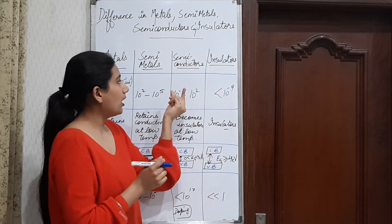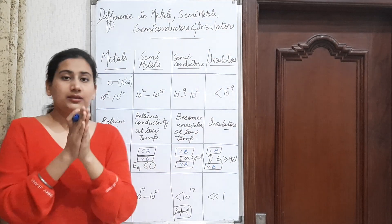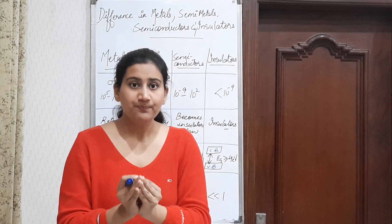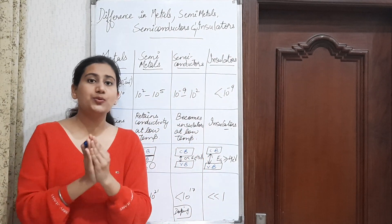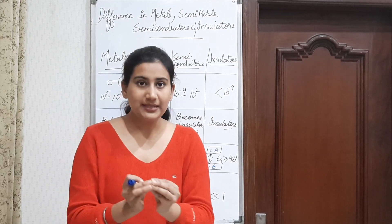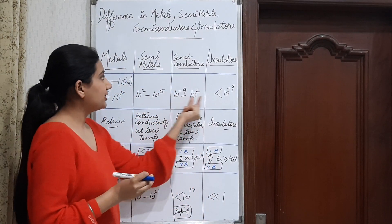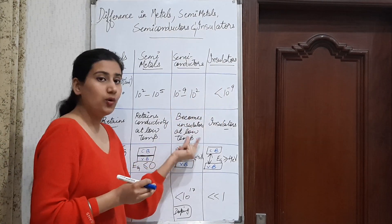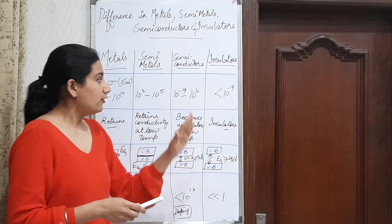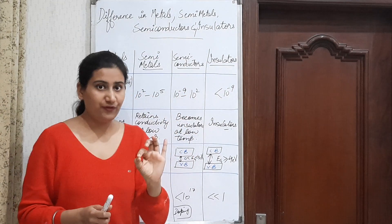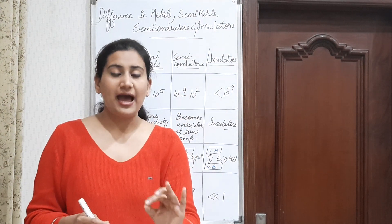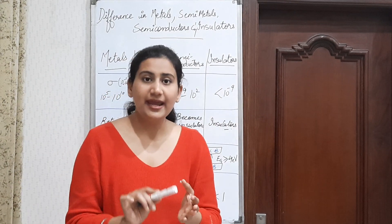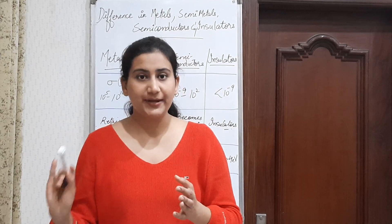But if we talk about semiconductors, the conductivity will decrease with decreasing temperature in such a way that semiconductors will become insulators. That means the conductivity reaches the conductivity level of an insulator for semiconductors at low temperature. So the specific definition for semiconductors is: these are the materials which have conductivity between metals and insulators, and they behave as insulators at low temperature.